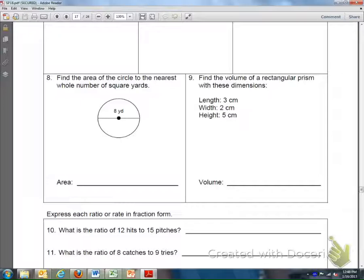Try out problem number 8 and then hit play in order to see its solution. Number 8 says find the area of the circle to the nearest whole number of square yards.